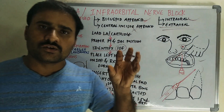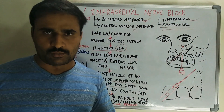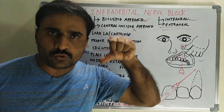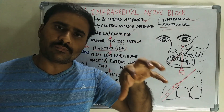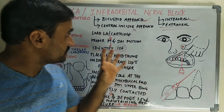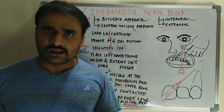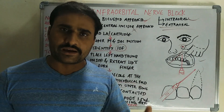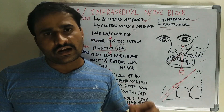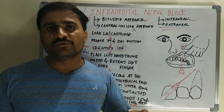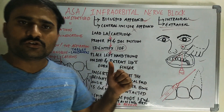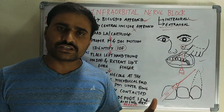Complications include hematoma. If hematoma occurs, apply pressure and cold application. This concludes the discussion on infraorbital nerve block. Thank you to Navin Kumar Reddy, Tarun Kumar, and Bohini Vidya for their contributions. If you like this video, hit the like button, share the video, and subscribe to the channel.